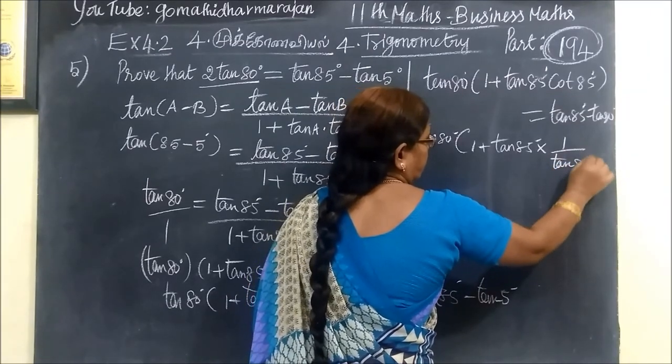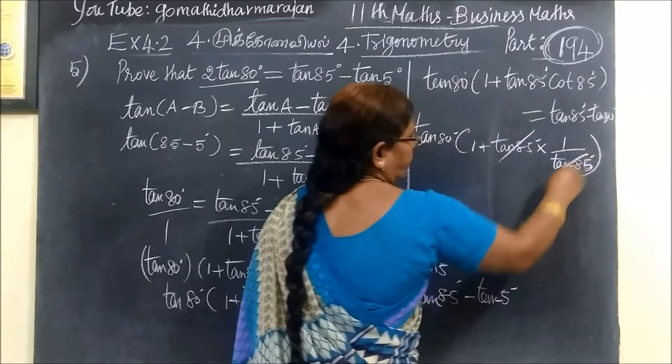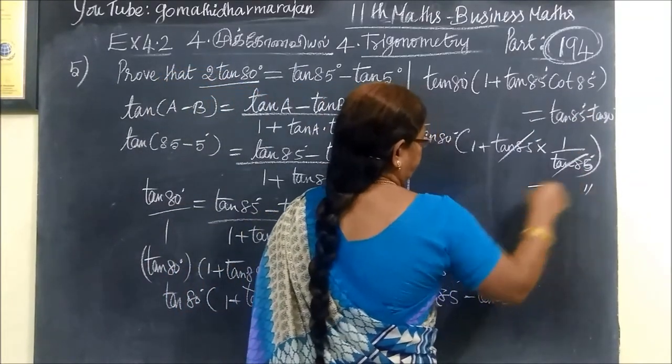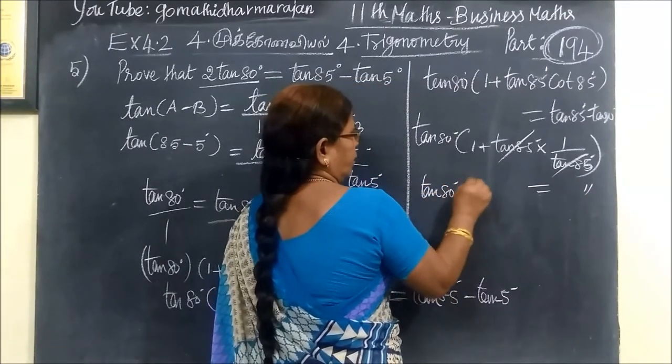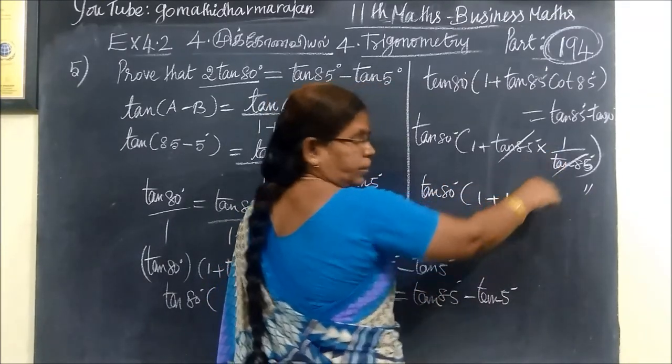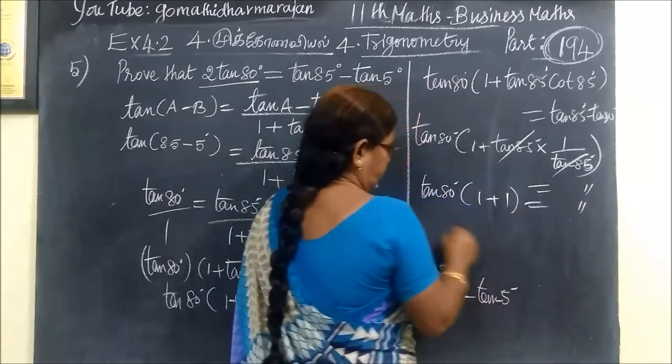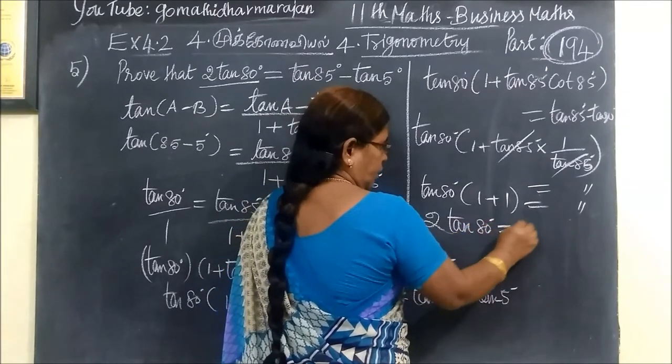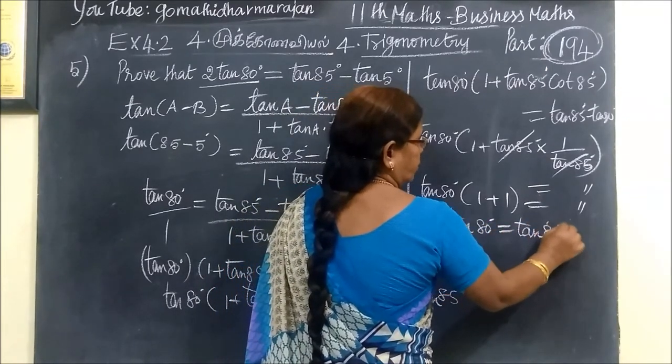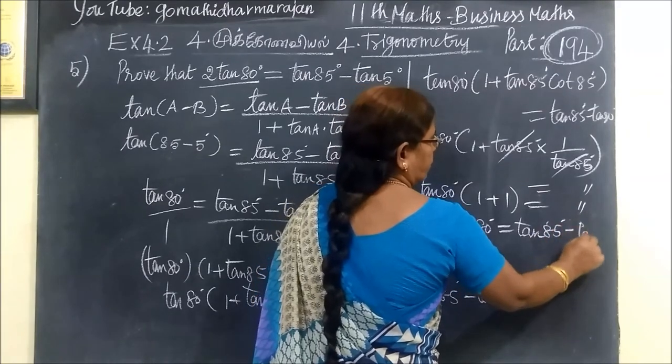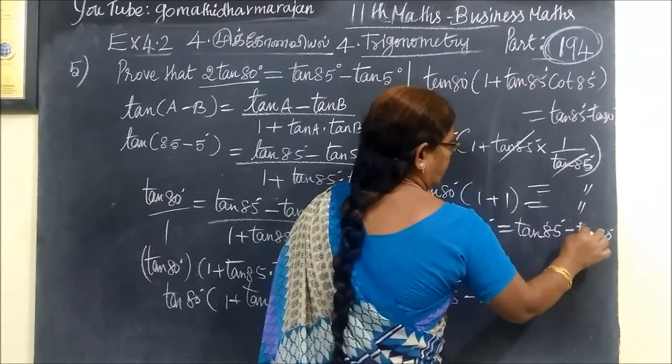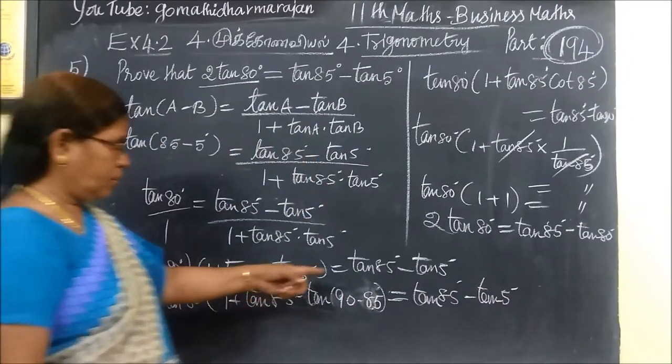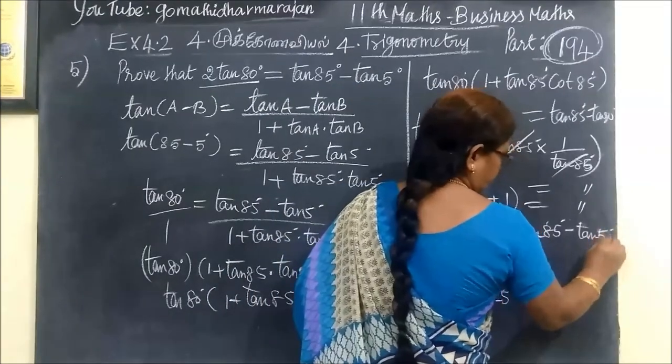This can be written as tan 85 equals cot 5. Here you write tan 80 times 1 plus 1. Since 1 plus 1 equals 2, we get 2 tan 80 equals tan 85 minus tan 5. That is the answer.